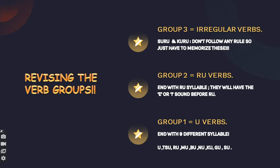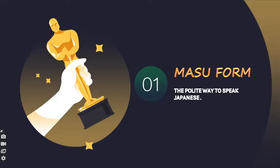Group 3 is the irregular verbs: suru and kuru — only two verbs. They do not follow any rules, so you have to memorize them. Suru means 'to do,' kuru means 'to come.' Group 2 is the ru verbs — verbs ending with ru that have a sound of e or i before it. Group 1 is the u verbs; they end with 9 different syllable sounds: u, tsu, ru, mu, bu, nu, ku, gu, su. You will find these sounds at the end of any group 1 verb.